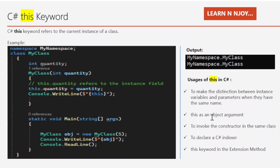Here is an overview of all the use cases of the 'this' keyword: number one, to distinguish instance variable from parameters with the same name; number two, 'this' as an object argument; number three, to invoke a constructor in the same class; number four, to declare a C# indexer; and number five, to use 'this' keyword in an extension method.